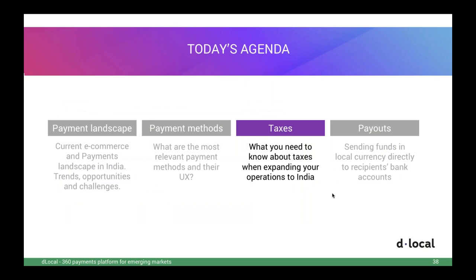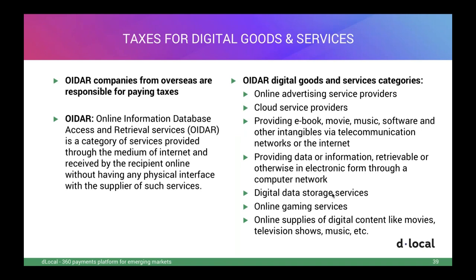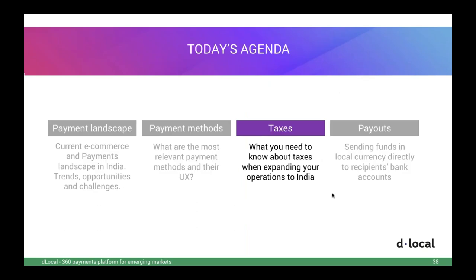After payment methods, a quick deep dive on taxes for international companies going into India, focusing on digital goods and services. Before that, a note on interesting payment habits: the average ticket value for net banking is around 6,000 rupees — the highest average — then cards with 2,000 rupees, and UPI with a much smaller ticket of 800 rupees. The trend shows UPI growing in both volume and value.